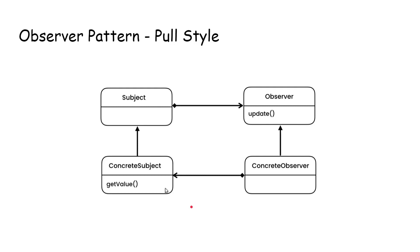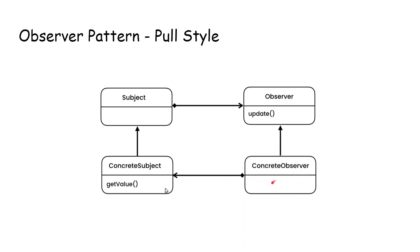The other style is the pull style observer pattern. Instead of passing data inside the update function, the concrete observer holds a dependency on the concrete subject. We create an instance of the concrete subject and pass it into the concrete observer. The update function acts as a notifier — it signals to all observers that the concrete subject's value has changed, so they should pull and update their current data accordingly.